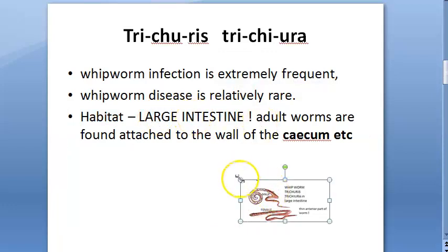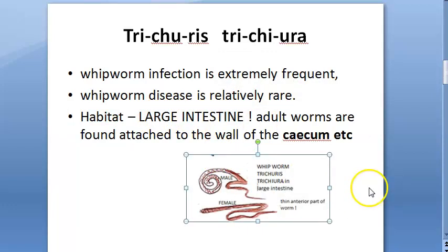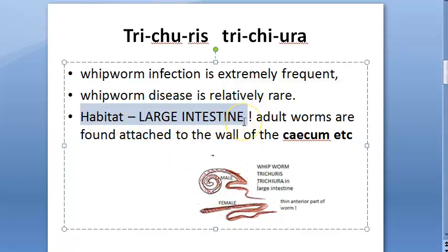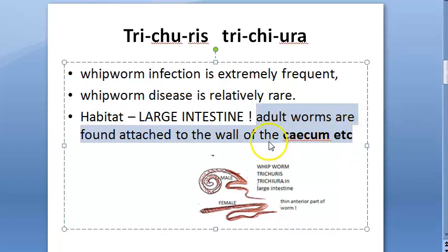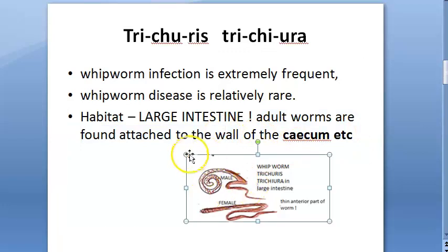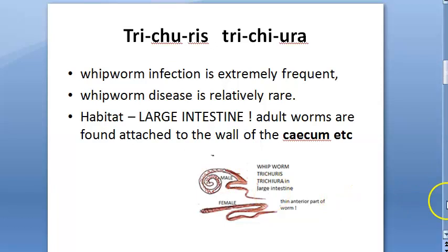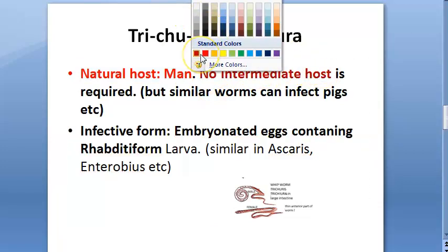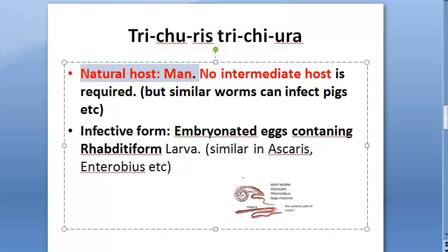The habitat of Trichuris trichiura is the large intestine. Another worm that lives in the large intestine is Enterobius vermicularis, also a nematode. For Trichuris trichiura, the adult worms are found attached to the wall of the cecum. The natural host is man, and there is no intermediate host.